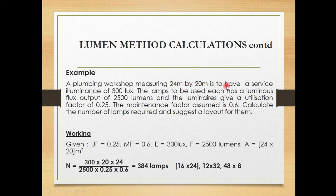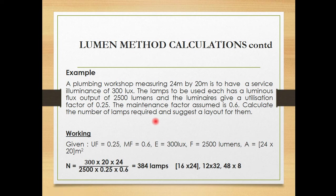For a worked example: a room measuring 20 meters by 24 meters is to have a service illuminance of 300 lux. Each lamp has a luminous flux output of 2,500 lumens. The luminaires give a utilization factor of 0.25 and the maintenance factor assumed is 0.6. Calculate the number of lamps required and suggest the layout.